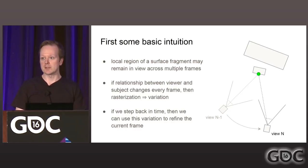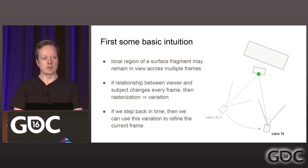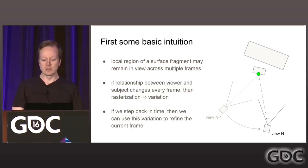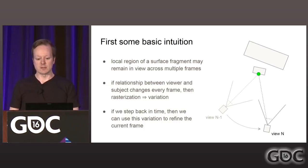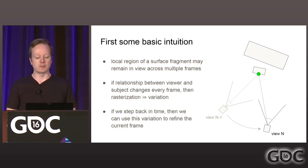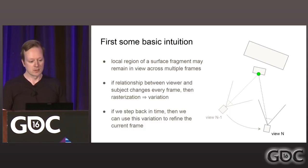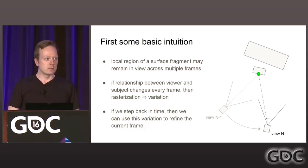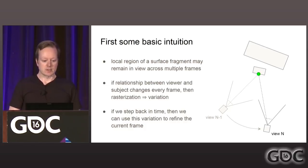Let's forget about pixels for a moment and think about cameras between frames. If we have some surface in space and a camera looking at a local region, and then we have another camera in the past also looking at this region from a slightly different perspective, we obtain slightly different information about that local surface region. Rasterization has unpleasant aliasing artifacts, but this can also just be viewed as variation. If we can make the correlation and step back in time, we can use this variation to refine the current frame.